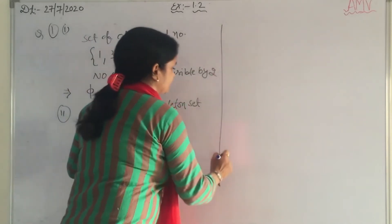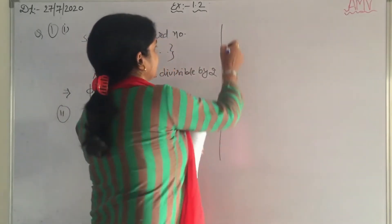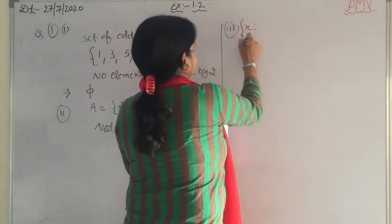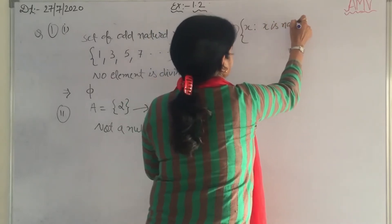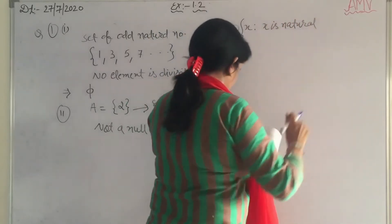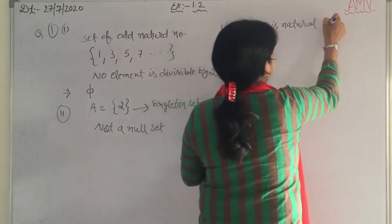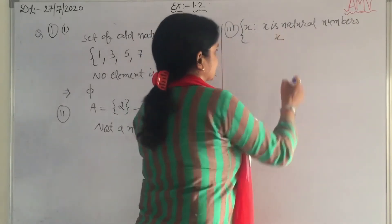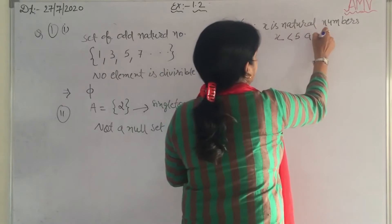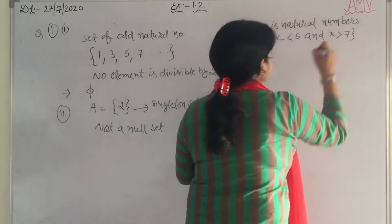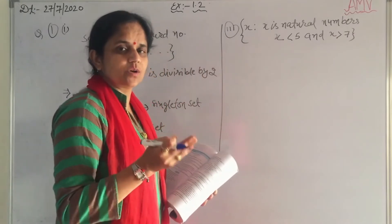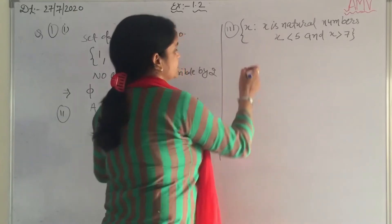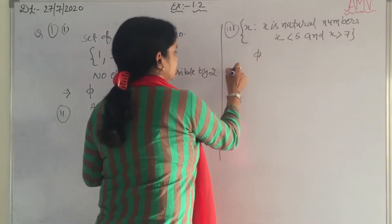Next is the set of x such that x is a natural number, x less than 5 and x greater than 7. It is a null set — no number can be both less than 5 and greater than 7. So it is also a null set.